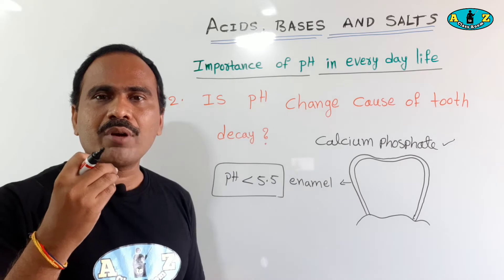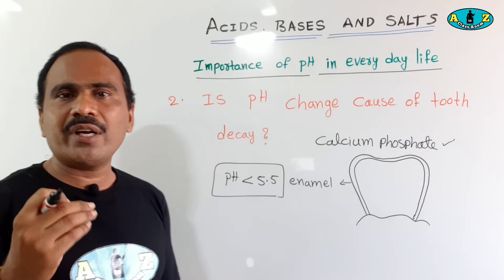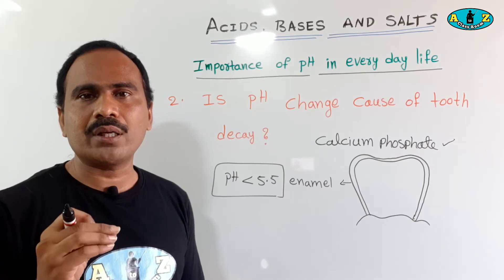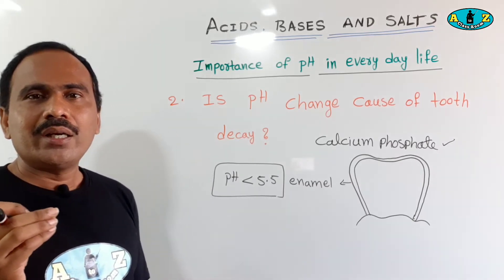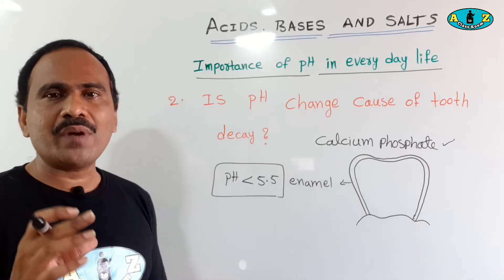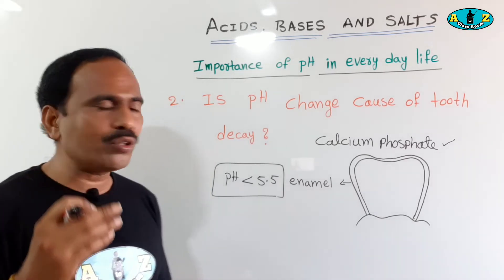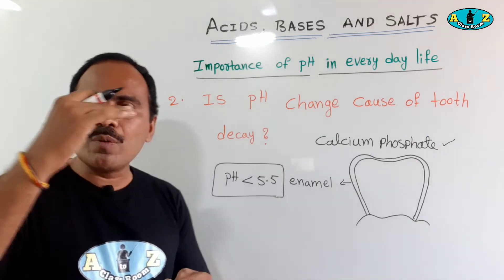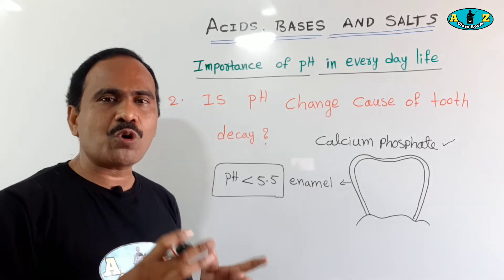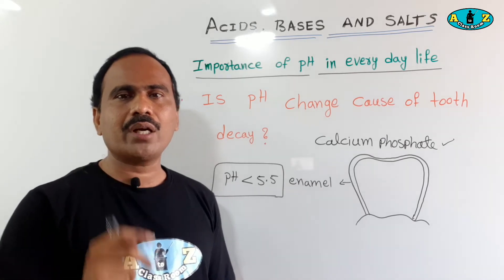Why does acidic nature increase in our mouth? When we eat different types of food, the remaining food particles — mainly sugar-type food particles — decay due to bacteria. In that process, they release acidic materials. That is why our mouth pH value decreases. If our mouth pH value is less than 5.5, the acidic nature is very strong. By controlling the acidic nature in our mouth, we can control tooth decay.